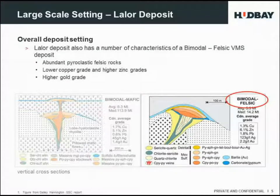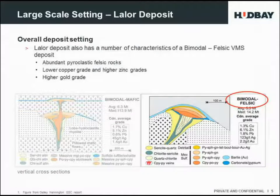Lawler also shares some characteristics more like a bimodal felsic deposit. Bimodal felsic deposits have a lot of pyroclastic felsic rocks, lower copper grade and higher zinc grade, and also higher gold grades.